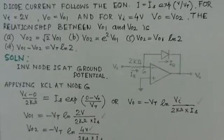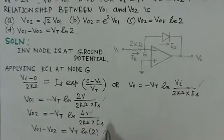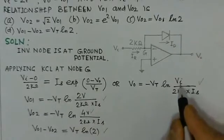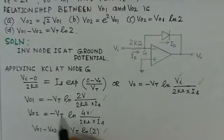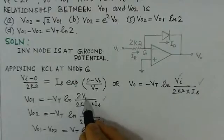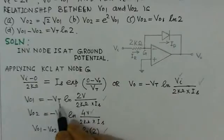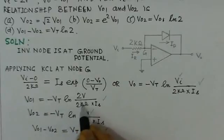Now in the expression we just substitute the value of Vi. First we have to substitute 2 volts as given, and the V01 value is minus Vt ln 2 volts divided by 2 kilohms times Is.